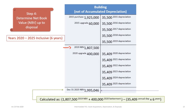Continuing with the T-account: the 2019 net book value after depreciation was $1,807,500; we add the $400,000 upgrade in 2020, then subtract six years of depreciation at $35,409. Note it is six years inclusive from 2020 to 2025 — 2020, 21, 22, 23, 24, and 25. A common mistake is to calculate 25 minus 20 as 5, but with full years it is 6. The final net book value at December 31st, 2025 is $1,195,046.